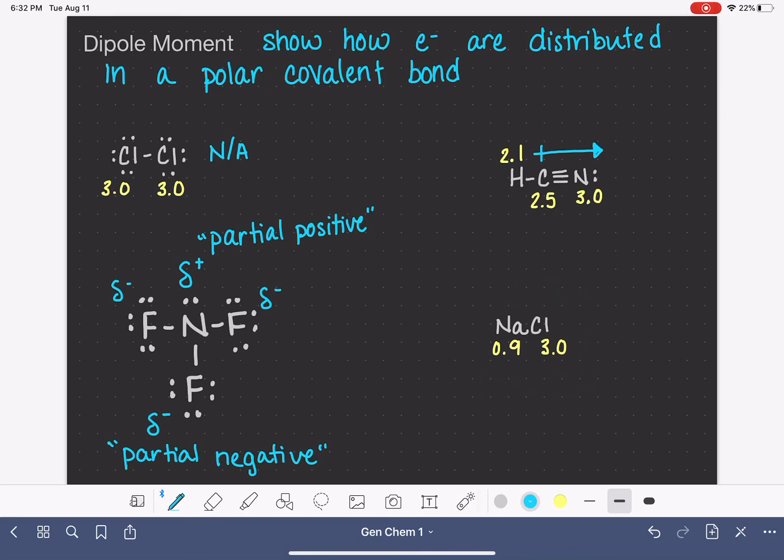We only represent dipole moment in molecules that have polar covalent bonds. So if it's an ionic bond or if it's a nonpolar bond, we would never draw the dipole moment for those molecules.